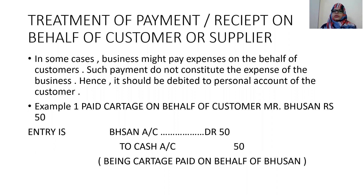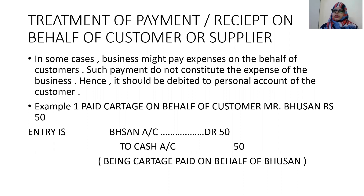Cash is a real account — debit what comes in, credit what goes out. Cash of Rs. 50 is going outside the business, so cash account is credited. Bhushan account is debited because it is a personal account and the rule for personal account is debit the receiver, credit the giver. The person on whose behalf we have paid — we debit that particular person's account. Journal entry: Bhushan's account Dr. Rs. 50, to cash account Rs. 50. Narration: being carriage paid on behalf of Bhushan.